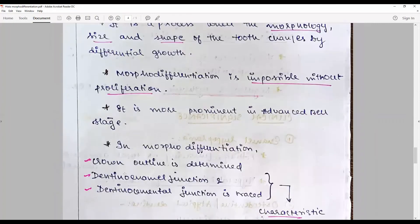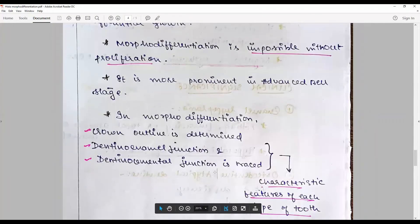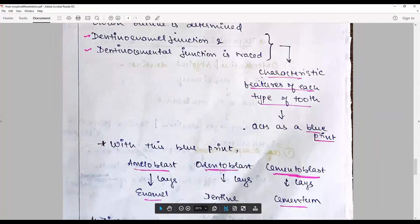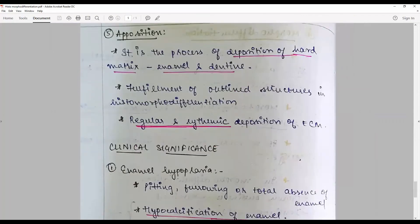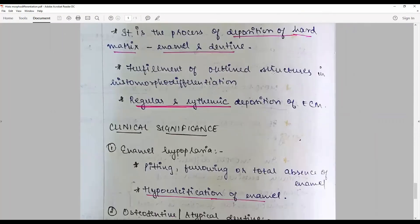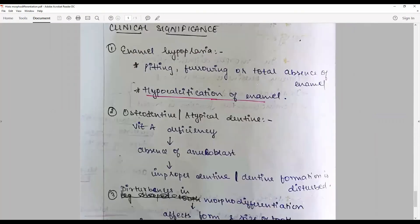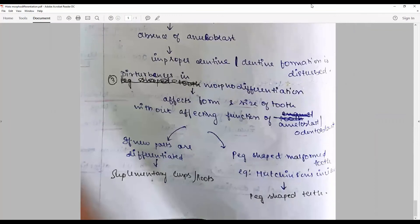For morpho-differentiation, discuss crown outline, dentino-enamel junction, dentino-cemental junction, and blueprint—all these features must be mentioned for this question. For apposition, talk about abnormalities and the normal process. Consider all these factors for clinical significance.